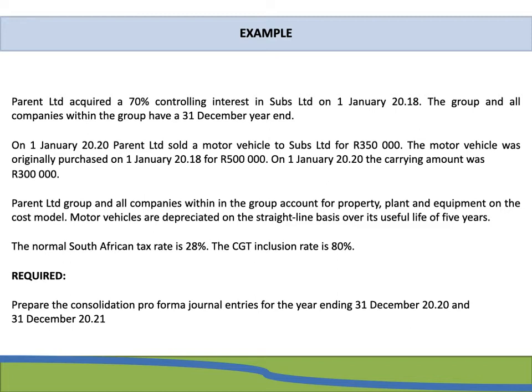Parent Limited and all companies within the group account for property, plant and equipment on the cost model. Motor vehicles are depreciated on a straight-line basis over a useful life of five years. The normal South African tax rate is 28% and the CGT inclusion rate is 80%. We need to prepare consolidation pro forma journal entries for the year ending 31 December 2020 as well as for 31 December 2021.